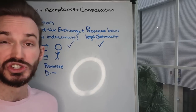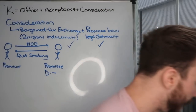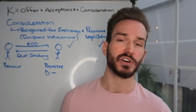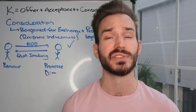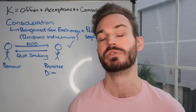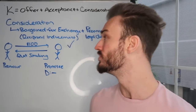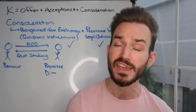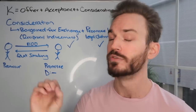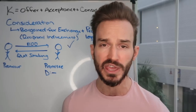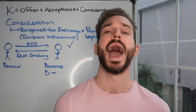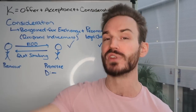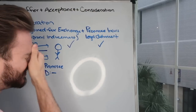Refraining from doing something you're legally permitted to do can be a legal detriment — that's the point of the forbearance example. Also, promising not to sue could be a legal detriment, and this is governed by a good faith test. Promising not to sue can count as a legal detriment so long as the promisee honestly and in good faith believes they have a claim. Even if the claim turns out to be completely frivolous, that doesn't matter — it's only about what the promisee actually believed.